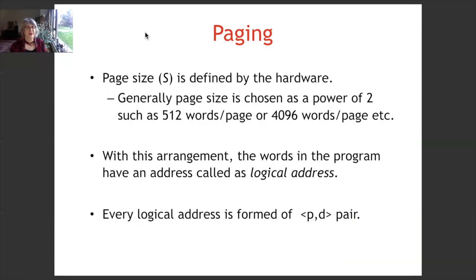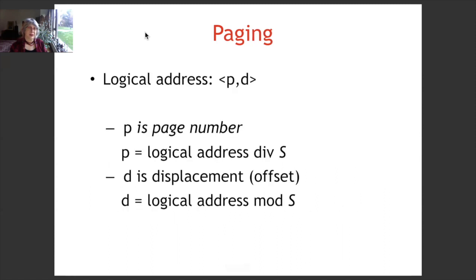Page size is defined by the hardware. Generally, page size is chosen as a power of 2, such as 512 words per page or 4096 words per page. With this arrangement, the words in the program have an address called a logical address. Every logical address is formed of a pair p and d. The logical address p and d is defined as: p is the page number, obtained as logical address divided by s. And d is displacement, also called offset, obtained by logical address mod s — that is, the remainder after dividing by s.